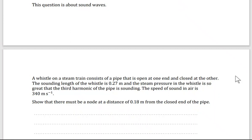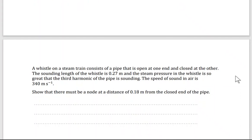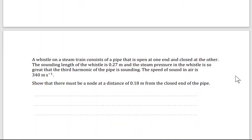So the first question from IB past papers exam. We have a whistle on a steam train, consists of a pipe that is open at one end and closed at the other. The sounding length of the whistle is 0.27 meter, and the steam pressure in the whistle is so great that the third harmonic of the pipe is sounding.